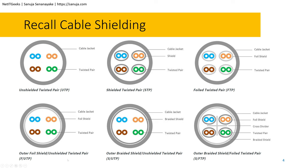FUTP has a jacket outside with foil right beneath it. SUTP has a cable jacket with a braided shield, typically used in outside environments. SFTP has foil shields between each twisted pair, plus a cable jacket, a braided shield beneath it, and also a plastic cross divider between each pair. The cost increases as you move from UTP toward SFTP, but there are use case scenarios requiring that higher-end cable.